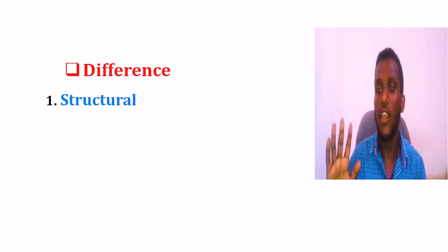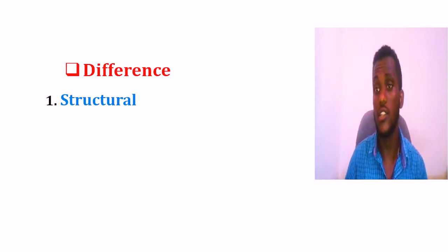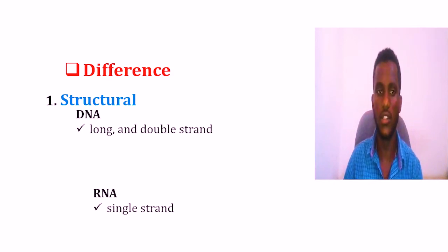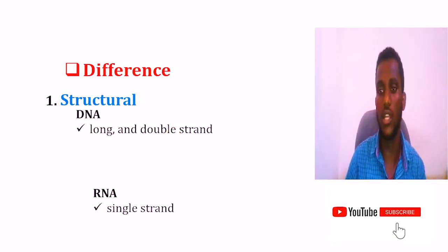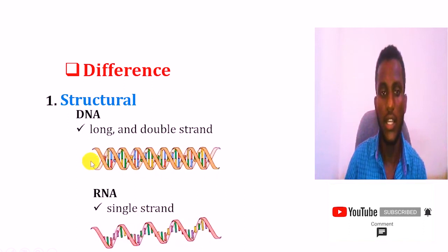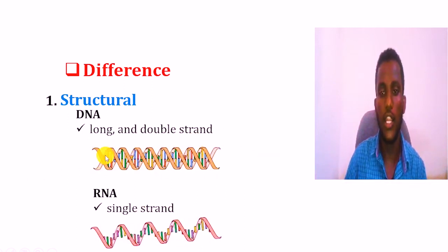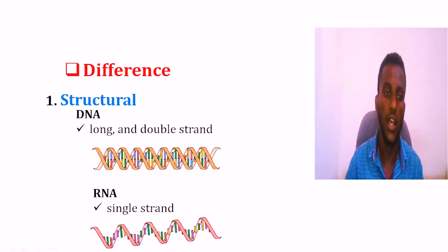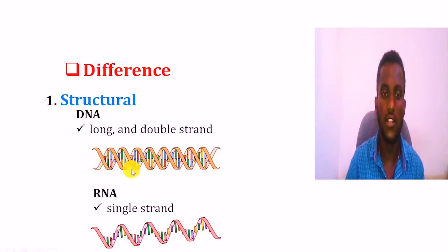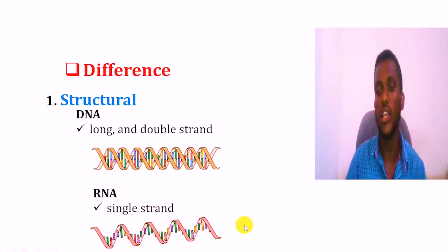RNA and DNA differ in their structure. DNA is long and double-stranded, but in the case of RNA, it is single-stranded. As you can observe here, DNA forms a helix with two strands, while RNA has only a single strand.